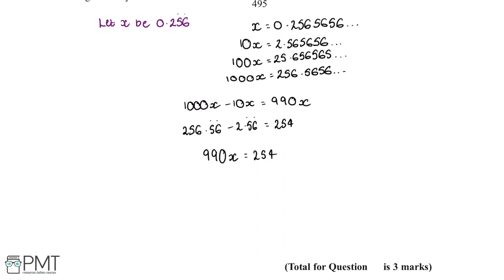And to do this we can first divide both sides by 990, and this gives us that x is equal to 254 over 990.